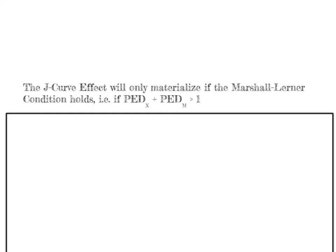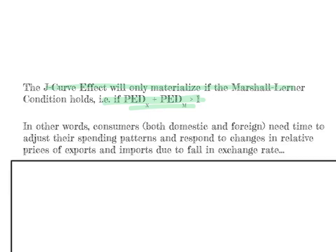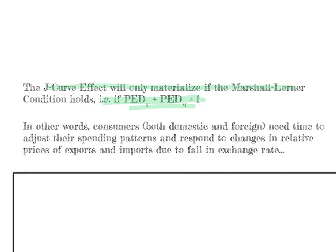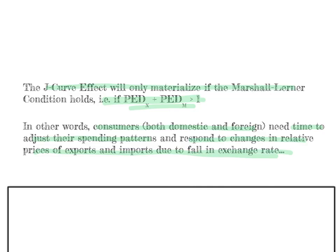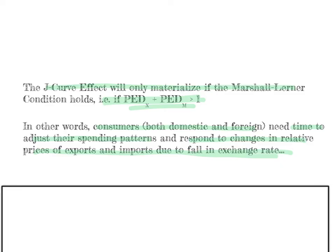The J-curve effect will only materialize if the Marshall-Lerner condition holds — meaning only if the combined price elasticities of demand for both exports and imports are greater than one. In other words, consumers, both domestic and foreign, need time to adjust their spending patterns and respond to changes in the relative prices of exports and imports due to a fall in the exchange rate. I hope this video has helped you understand the Marshall-Lerner condition and the J-curve effect and how they relate to each other.